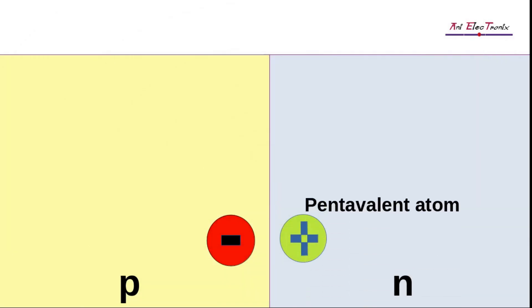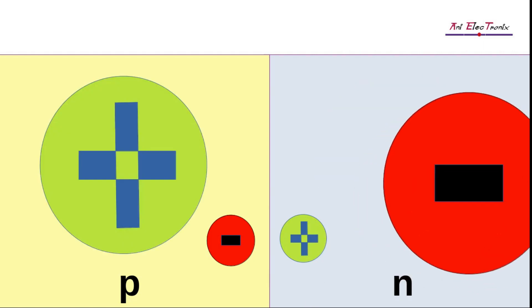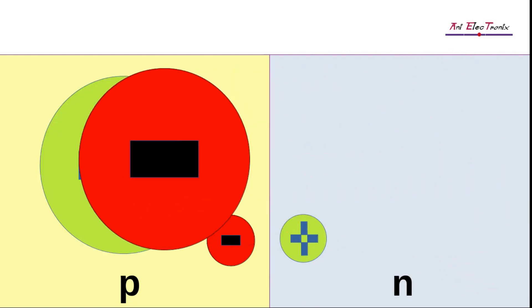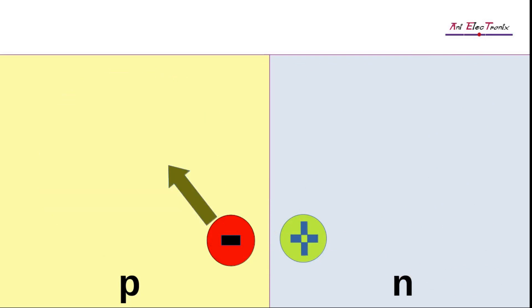Whenever an electron leaves the N-region, it leaves behind a positively charged pentavalent atom, which becomes a positive ion. The same free electron in the P-region combines with a hole in the trivalent atom valence orbit, causing the trivalent atom to become negatively charged as it captures this free electron.